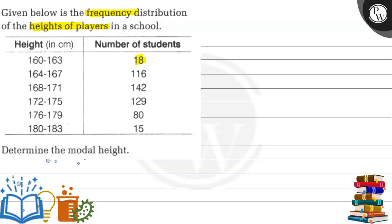For 164 to 167, the number of students are 116. For 168 to 171, the number of students are 142. For 172 to 175, the number of students are 129. For 176 to 179, the number of students are 80, and for 180 to 183, the number of students are 15. We need to determine the modal height.